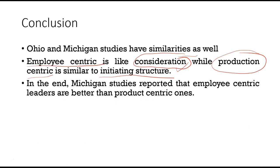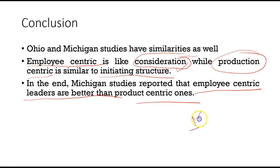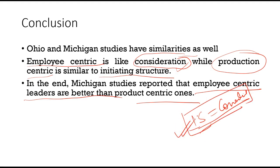However, the key difference was in the final conclusion. In Michigan studies, they reported employee-centric leaders to be better than production-centric ones — they stated that employee-centric leadership is more effective. Whereas Ohio studies concluded that initiating structure and consideration are both equal, with neither being better than the other. This was the key difference in the final findings.